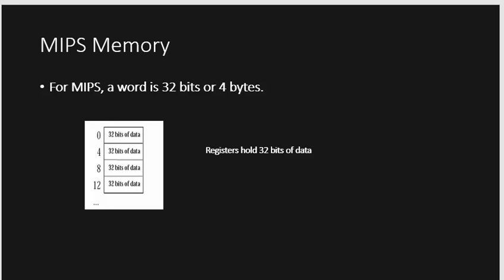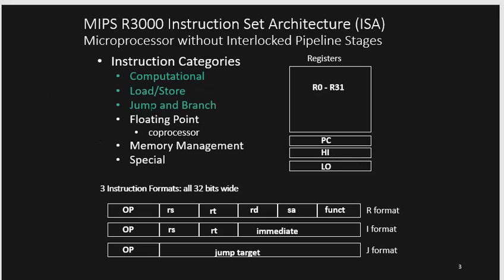A MIPS word is 32 bits or 4 bytes. So every instruction increments by 4 bytes — 0, 4, 8, 12. And every register holds 32 bits of data.